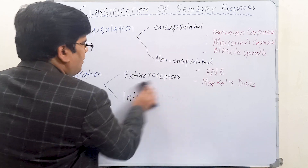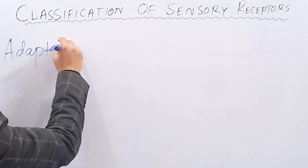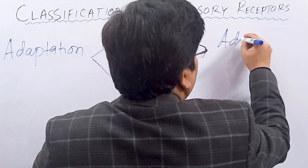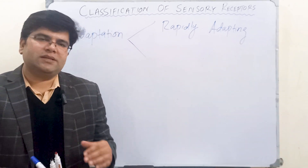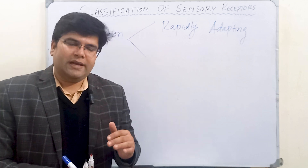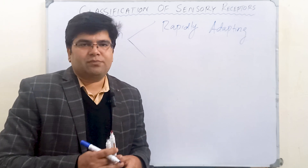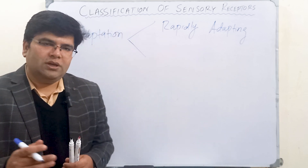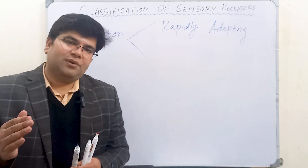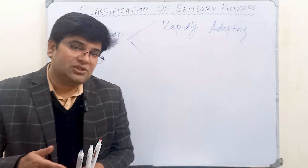Another way to classify receptors is on the basis of their adaptation. When a sustained stimulus is given to a receptor, initially the receptor has a higher receptor potential and increased frequency of action potentials along the nerve fiber. But with continuous stimulation, the receptor potential decreases and the number of action potentials decreases as well.